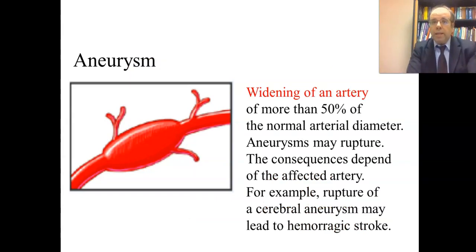An aneurysm is a widening of an artery — not a moderate widening, which would be called a dilation, but a widening of more than 50% of the normal arterial diameter. Aneurysms may rupture. The consequence depends on the affected artery. For example, rupture of a cerebral aneurysm may lead to a hemorrhagic stroke.